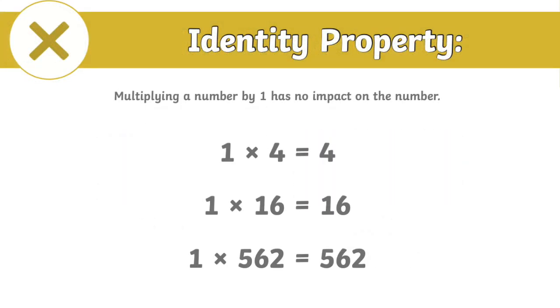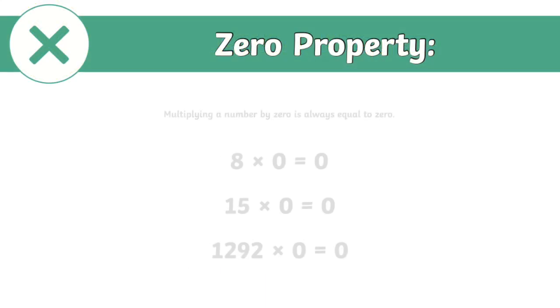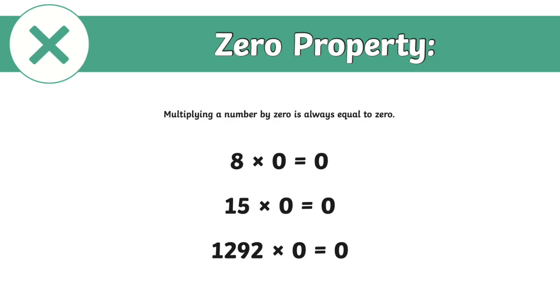Identity: multiplying a number by one has no impact on the number. Zero: multiplying a number by zero is always equal to zero.